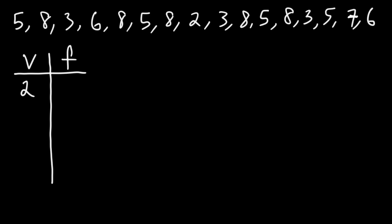Now, how many 2s do we have in our list? There's only 1. So the frequency for that number is 1. Now, the next highest number is a 3. And we have 1, 2, 3 threes in the list.